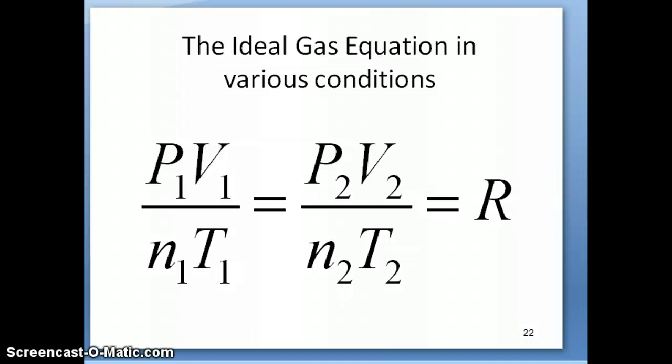So just the same way as all the other empirical gas laws, you can also use the ideal gas equation in various conditions. Because remember that this ratio PV over nT has to equal to that same constant, whether you do this experiment in condition number 1 or condition number 2. So you can write this as P1V1 over n1T1, that's condition number 1, has to equal to P2V2 over n2T2, and that all has to equal to R.